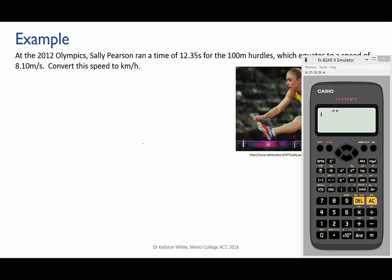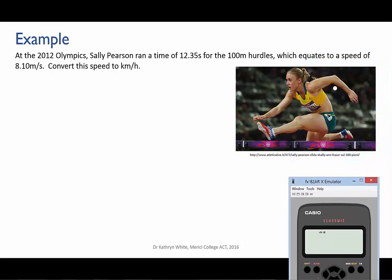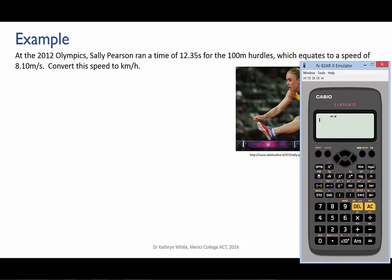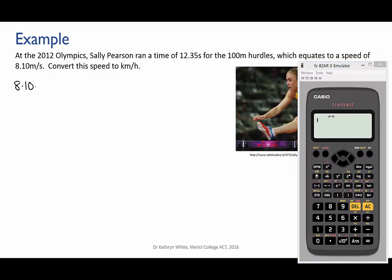Okay let's try an example where we need to change both parts of a compound unit. When Sally Pearson won the 100 meter hurdles at the 2012 World Championships, she ran at an average speed of 8.10 meters per second. Let's convert this to kilometers per hour, which is a speed unit that you're probably more familiar with.